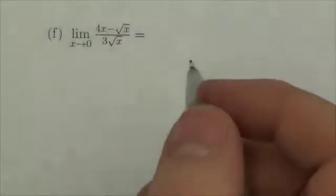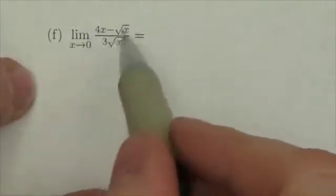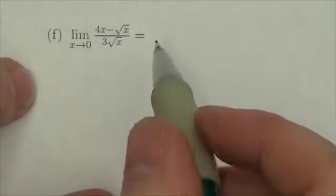All right everybody, this is the Math 31 limits review and we're working through question 1f. Now just take a look, I got a rational here so I do have the possibility that this might require some work here.